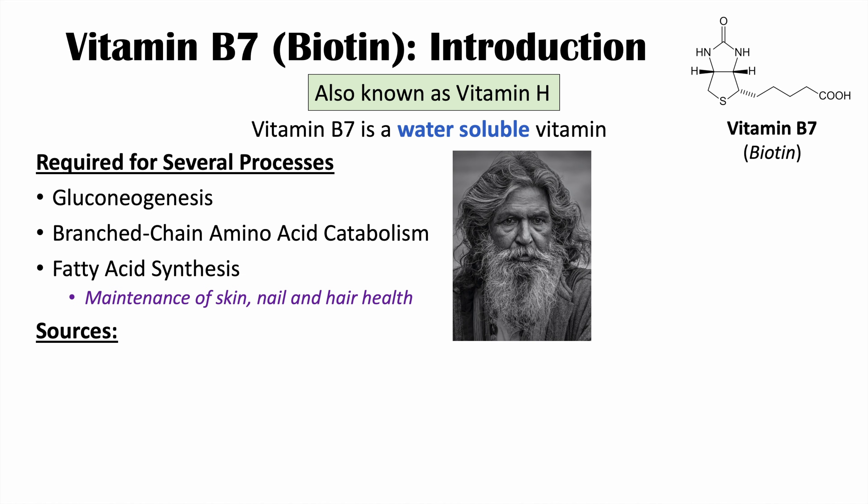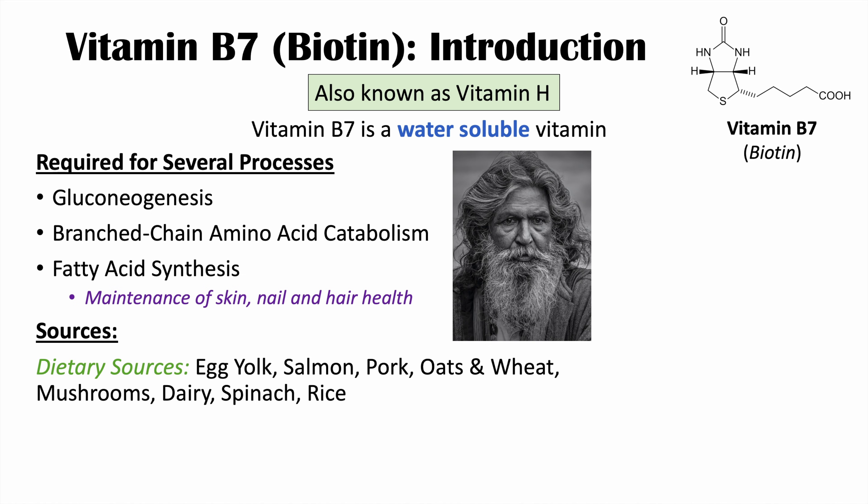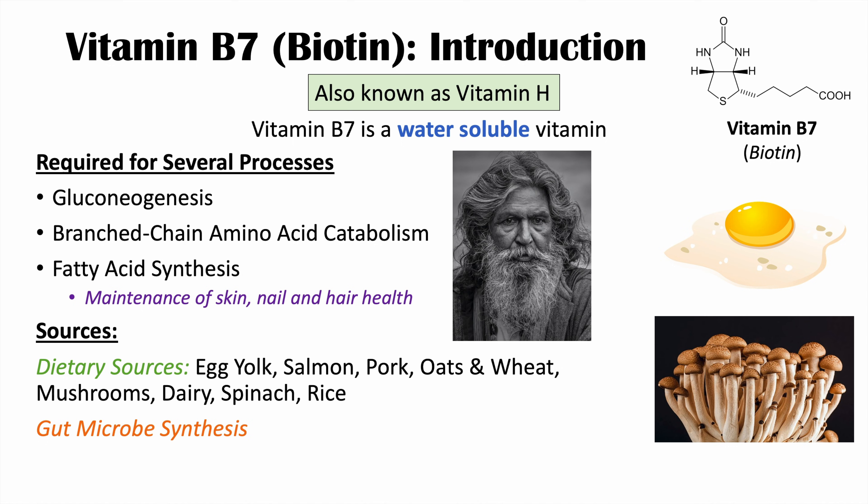Where do we actually get vitamin B7 or biotin? We can get it from our diet. Dietary sources include egg yolk, which is quite rich in biotin, as well as salmon, pork, oats, wheat, mushrooms, dairy, spinach, and rice. There's also gut microbe synthesis — certain populations of bacteria within your gastrointestinal system can actually produce and synthesize a significant amount of biotin.